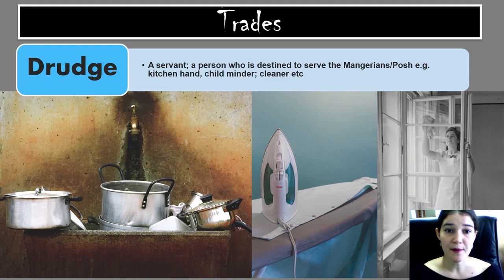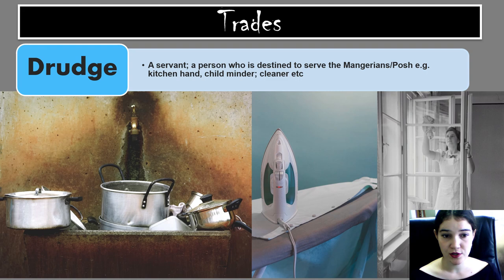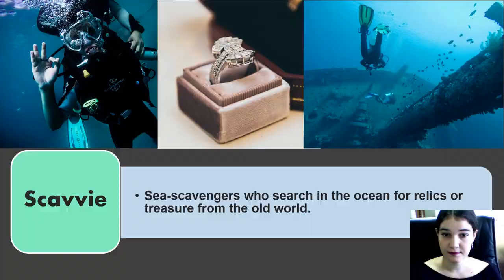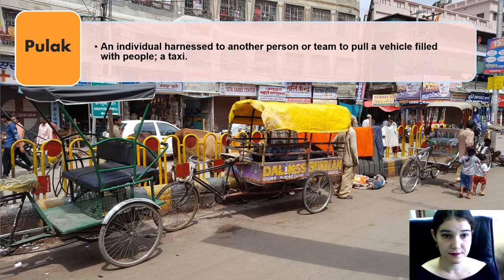We come across various trades in The Mark. Trades refer to the careers that people have. The first trade is a drudge — a servant or a person who is destined to serve the Mangareans or the posh. For example, their job consists of being a kitchen hand, a cook, a childminder or a cleaner. A scavi is a sea scavenger who searches the ocean for relics or treasures from the old world. A pulak is an individual harnessed to another person or a team to pull a vehicle filled with people — in other words, a taxi.